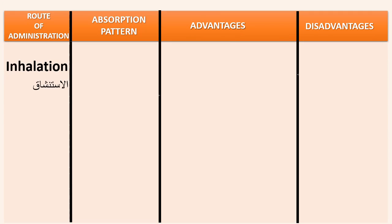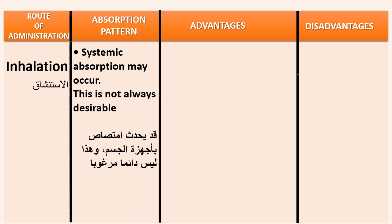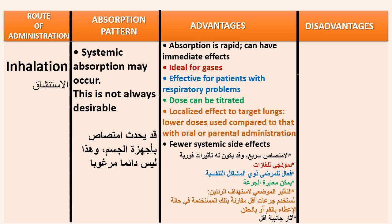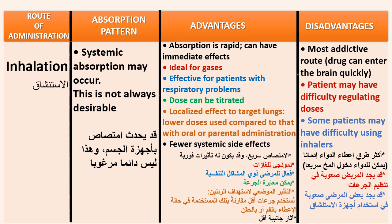Inhalation route: systemic absorption may occur, though this is not always desirable. Absorption is rapid with immediate effects, ideal for gases, and effective for patients with respiratory problems. Doses can be titrated, localized effects target the lungs, lower doses are used compared to oral or parenteral administration, and there are fewer systemic side effects. It is the most addictive route as the drug can enter the brain quickly. Disadvantages: patients may have difficulty regulating doses and some may have difficulty using inhalers.